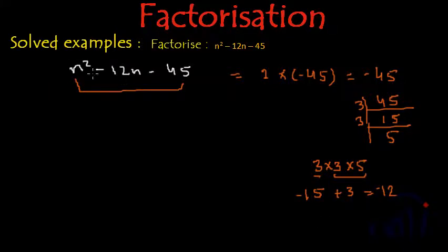So I am going to rewrite this expression. It will be n² and -12n I am going to write as -15n + 3n. -15n + 3n will give us -12n and then we have constant part which is -45.